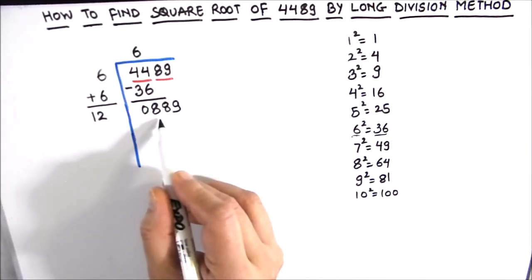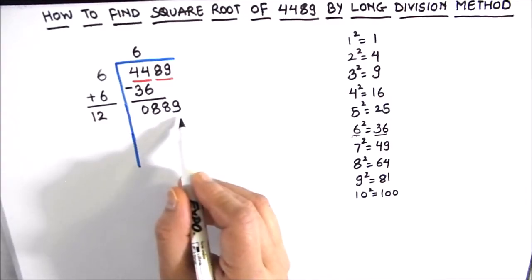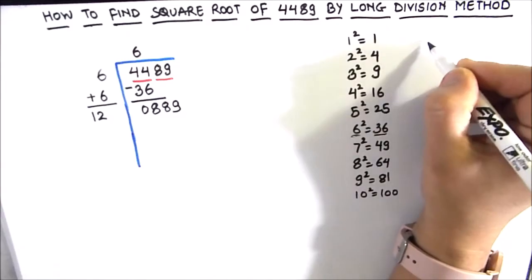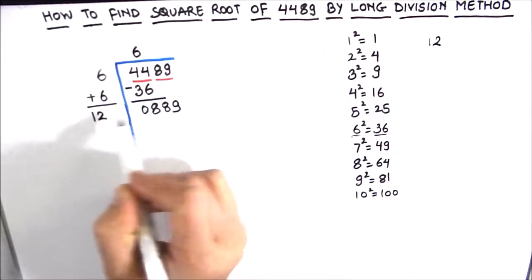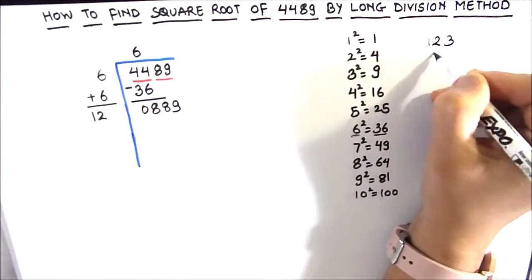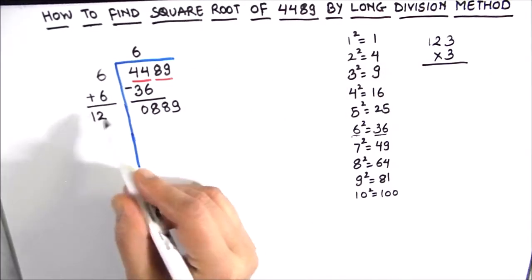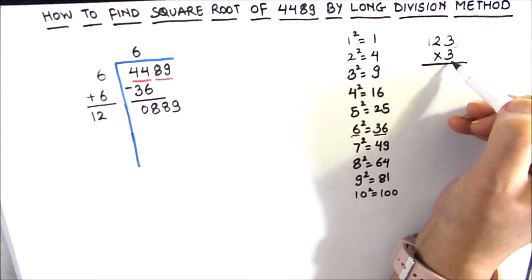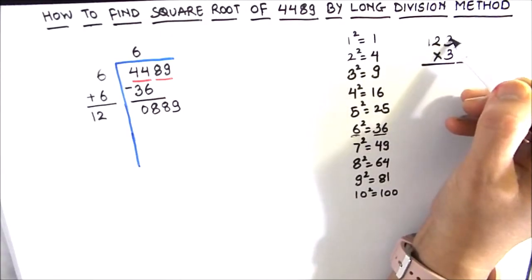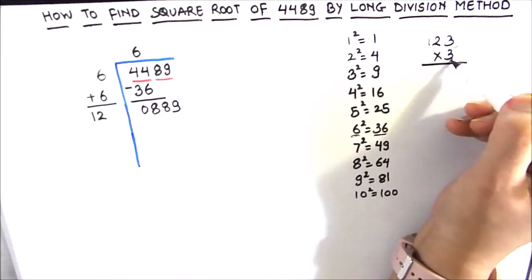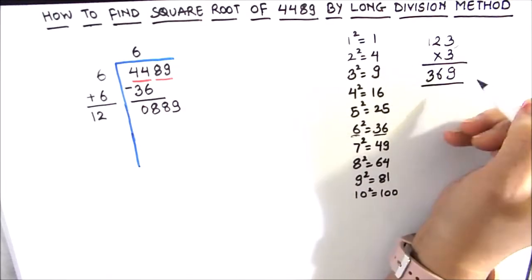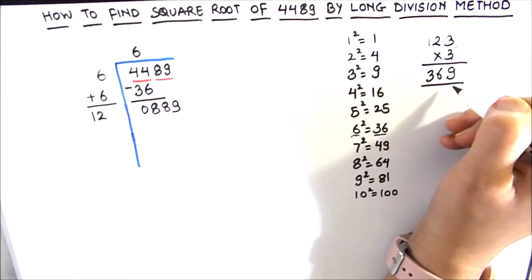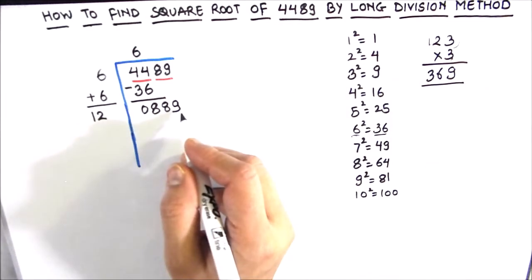So let us now find out the digit by trial and error method. If we let 3 here, we can get 9. So 123 times 3—any number which we are going to annex, we have to take the product with the same number. We are adding 3 here, we have to multiply by 3. So 3 times 3 is 9, 3 times 2 is 6, and 3 times 1 is 3. So this is 369, which is less than 889.